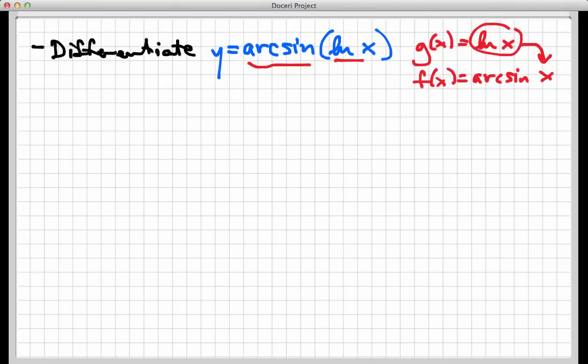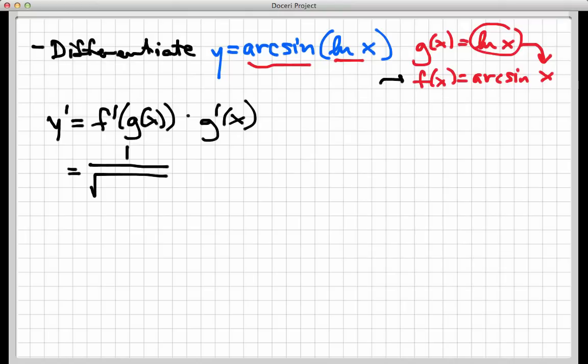So the chain rule would say the derivative of y is f prime of g of x times g prime of x. Now let's just walk through these derivatives here one at a time. f is the arc sine function. Its derivative is 1 over radical 1 minus, I'm gonna put a blank here, squared.